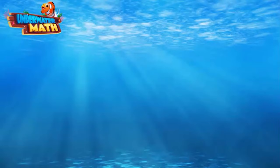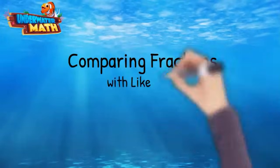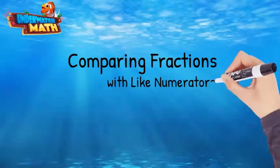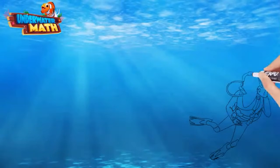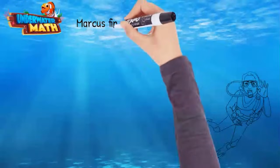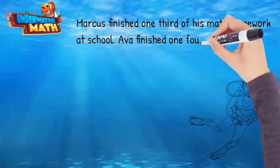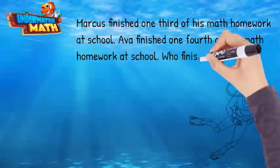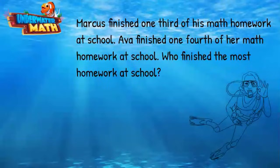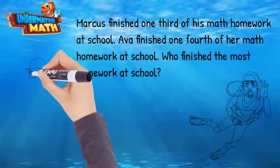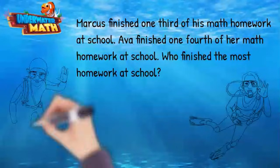Hello and welcome to Underwater Math. Today we're going to talk about comparing fractions with the same numerator in real world problems. Let's look at an example: Marcus finished one-third of his math homework at school, Ava finished one-fourth of her math homework at school. Who finished the most homework at school? These fractions don't have the same denominator, so how can I compare them?